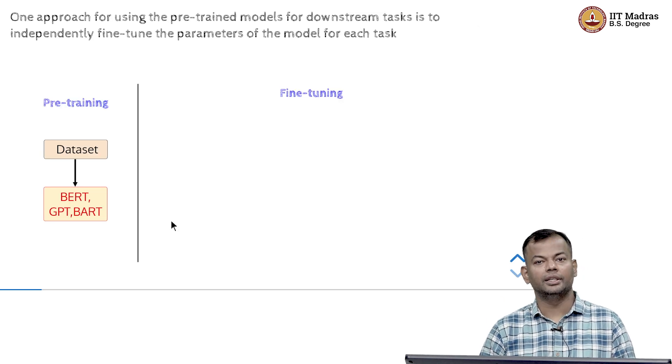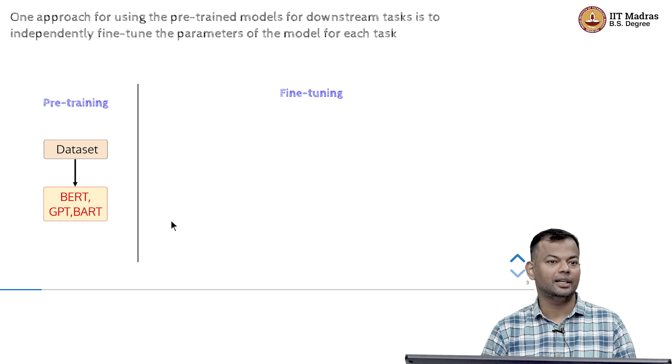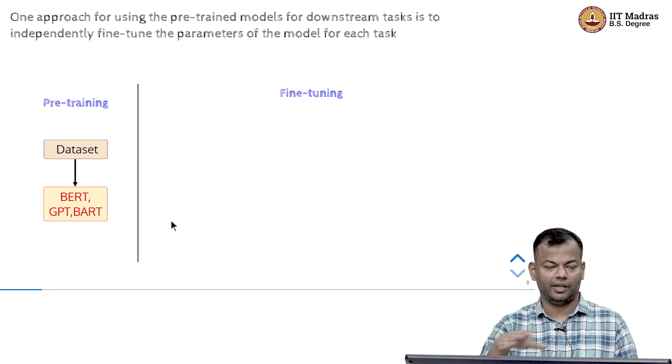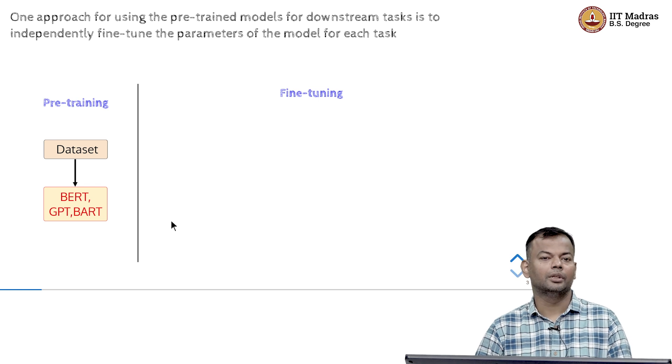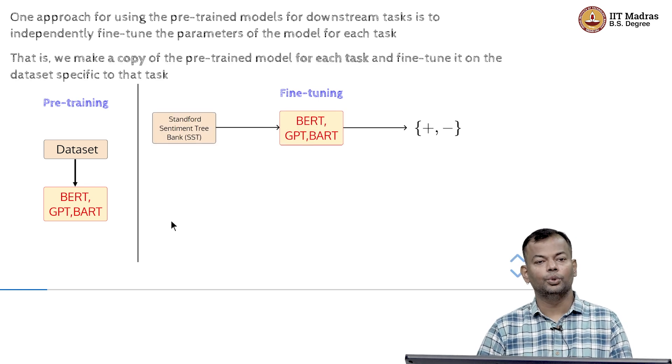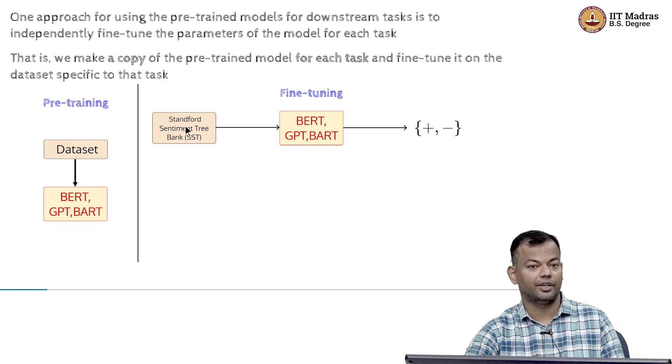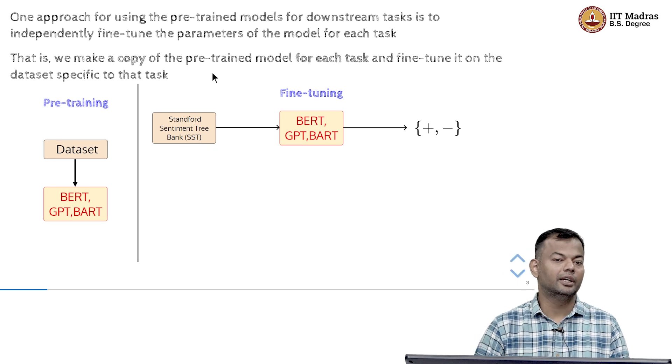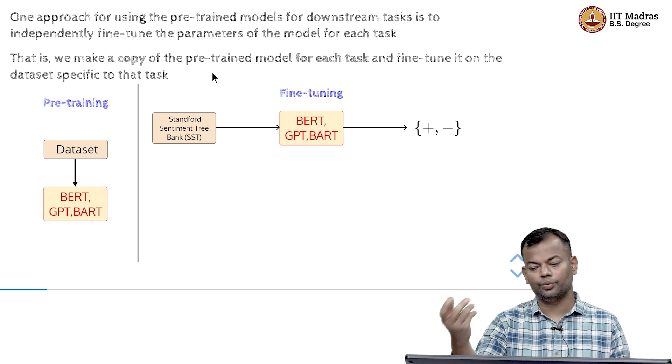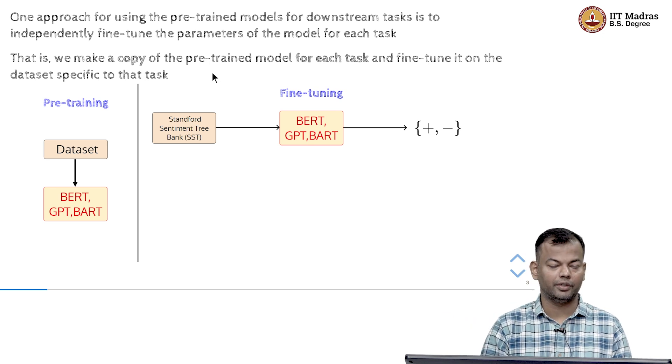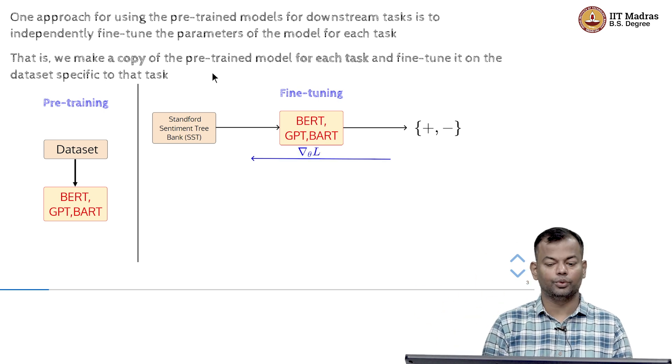So, one approach is to what is known as fine-tune the model. So, what do we do in that is that you have done the pre-training, you have trained some LLM, BERT, GPT, whatever is your favorite LLM. And now, you take that, you look at a task-specific dataset, which is say for the sentiment classification task, you are looking at the Stanford sentiment tree bank, you pass it through the model and you have the labels also associated with it. So, you have the sentence and the label and then you back propagate.